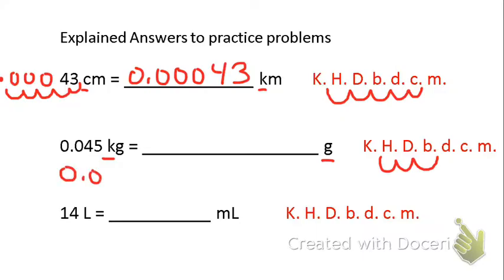So we have 0.045. We're going to hop over three. 1, 2, 3. So that would be our new decimal point. So we would have 45 grams.